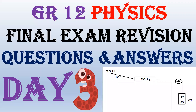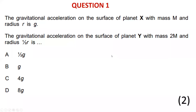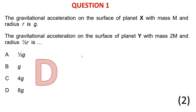Today's topic is mechanics. We have two questions every day. Question one: gravitational acceleration on the surface of planet X with mass m and radius r is g. Planet Y has mass 2m and radius r/2. The question asks: what is the gravitational acceleration for planet Y? The answer is 8g.